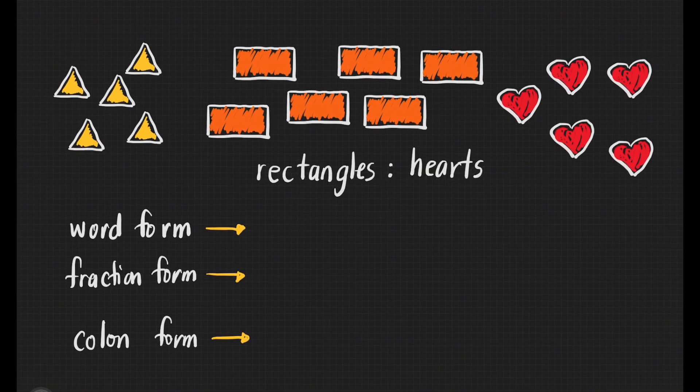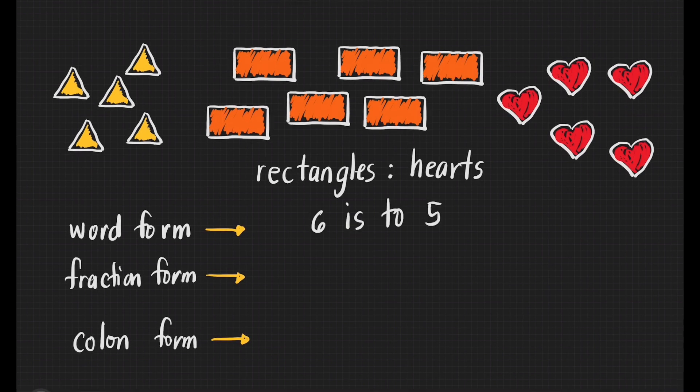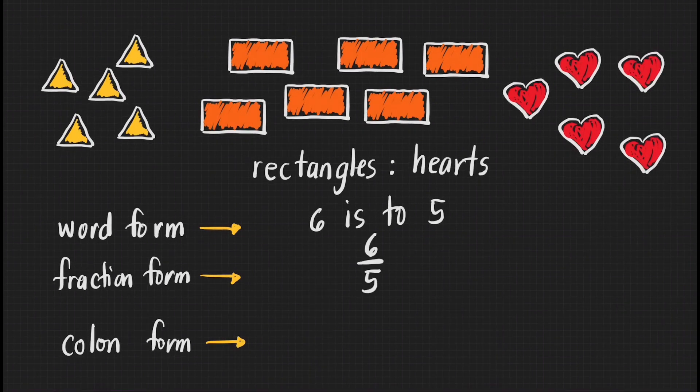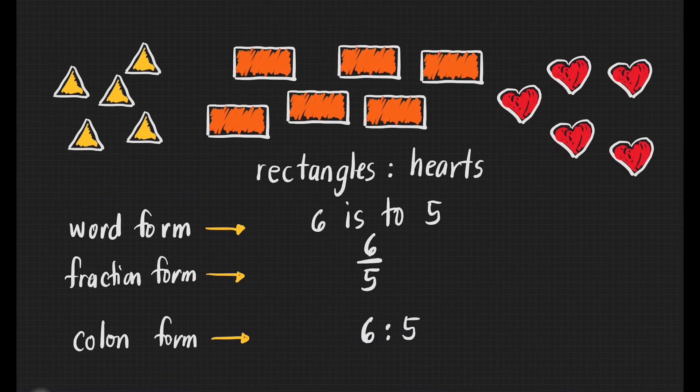Next, find the ratio of the number of rectangles to the number of hearts. For the word form, that's 6 is to 5. For the fraction form, that's 6 fifths. And for the colon form, that's 6 is to 5.